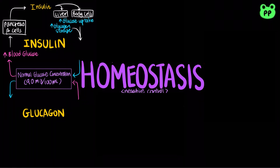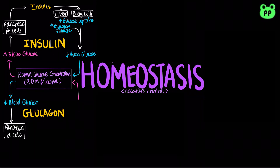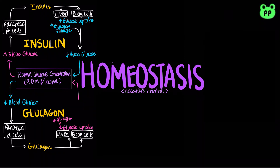This decreases blood glucose level to the standard concentration. On the other hand, when blood glucose level decreases, the alpha cells of the islets of Langerhans in the pancreas produce glucagon, which inhibits glucose uptake in liver and body cells and increases glycogen breakdown in the liver cells, raising the blood glucose level back to the normal concentration.